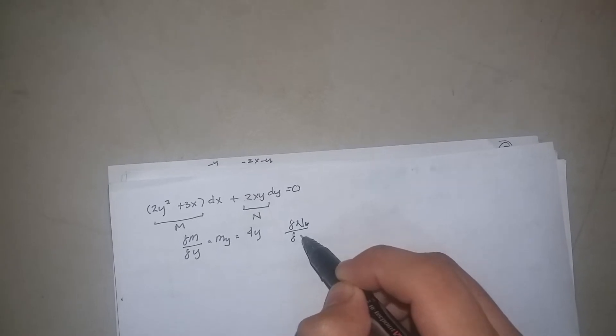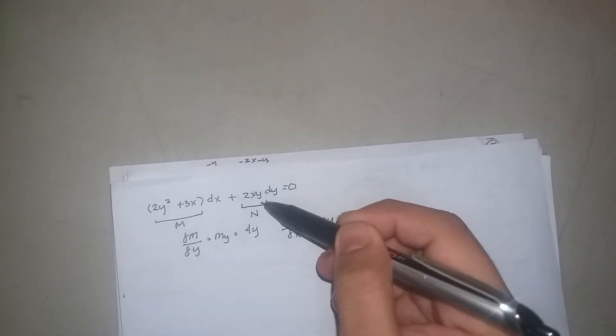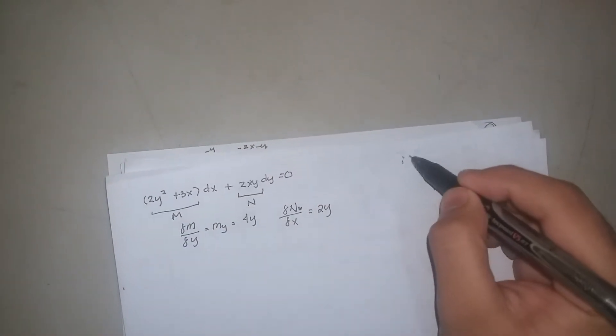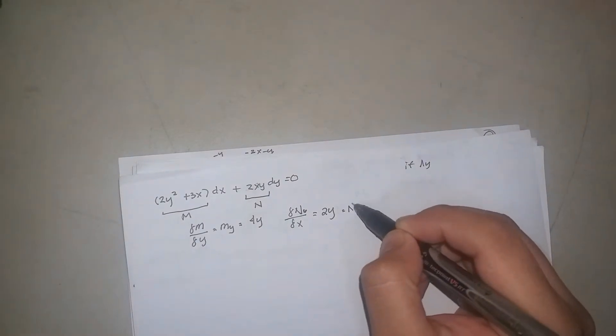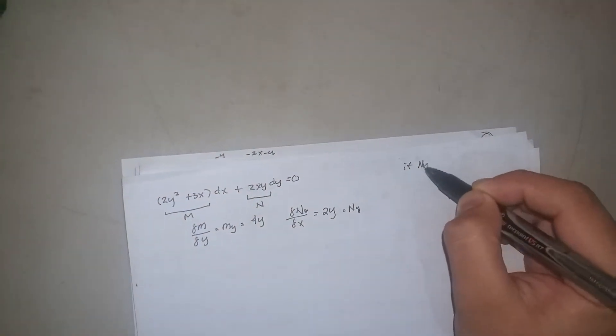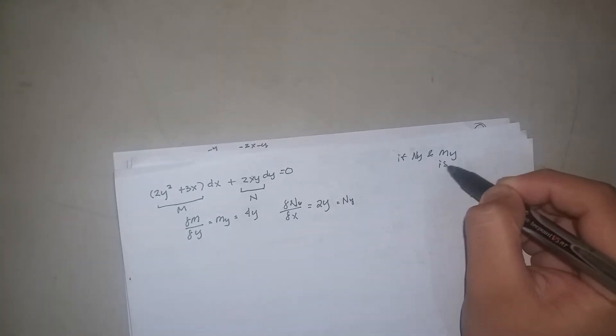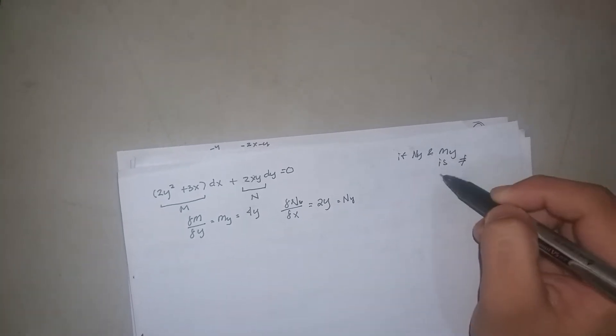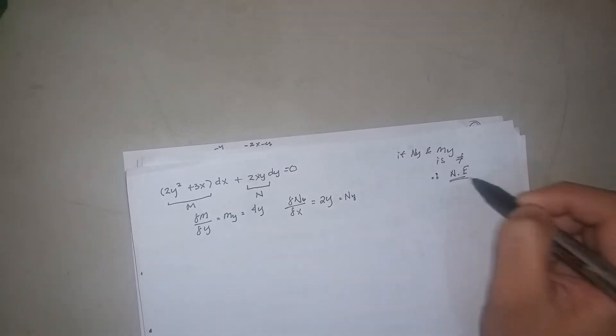Therefore y will be constant, so 2y because derivative of x is 1. 2y is constant, so therefore Nx... If Nx and My is not equal, therefore it's not exact.